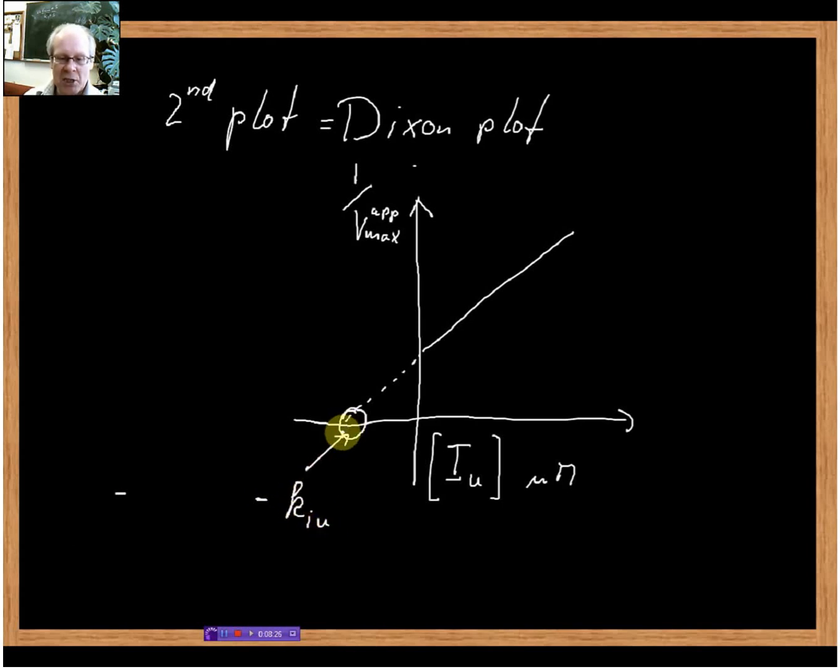We need to make a few statements about KiU. KiU is always larger than zero - it's always positive, because a negative dissociation constant would not make any sense. The unit for KiU is the same as the unit for the inhibitor concentration. In this case, it would be micromolar. With that approach, we can very easily determine what our dissociation constant for the inhibitor is.